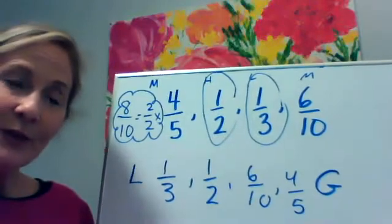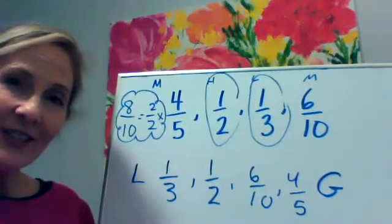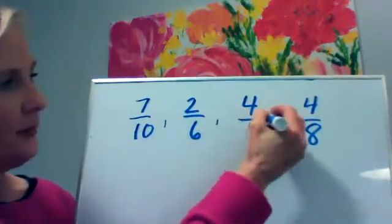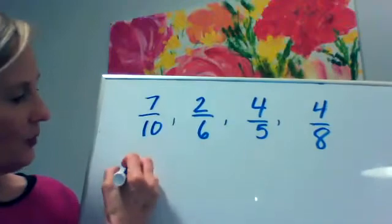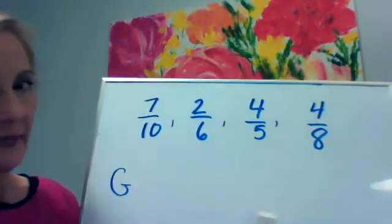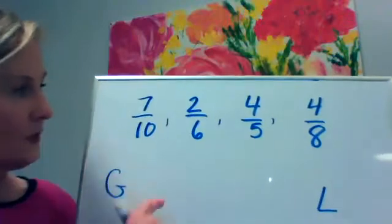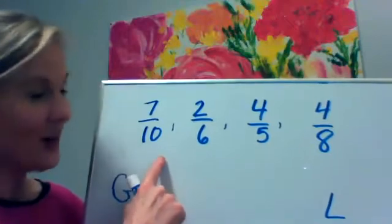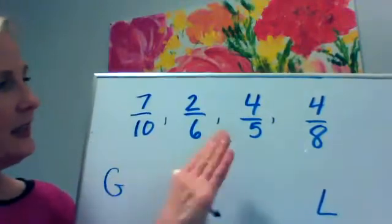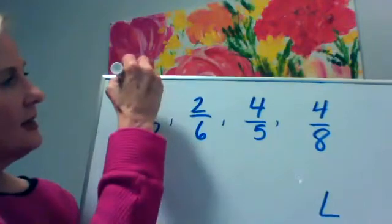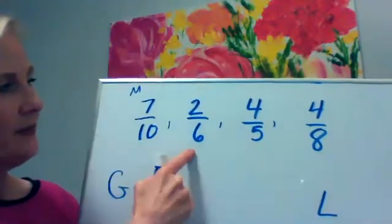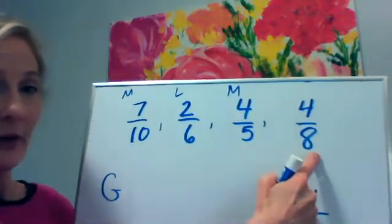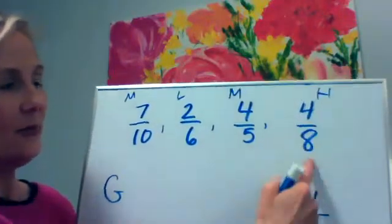That's one way you can order a list of fractions. This time we're going to order these fractions from greatest to least — the biggest amount to the least amount — because every once in a while they'll ask you to do that. I'm going to compare them to a benchmark fraction first to kind of clear the way. Seven tenths is more than a half, two sixths is less than a half, four fifths is more than a half, and four eighths is a half — it's an equivalent fraction that means half.